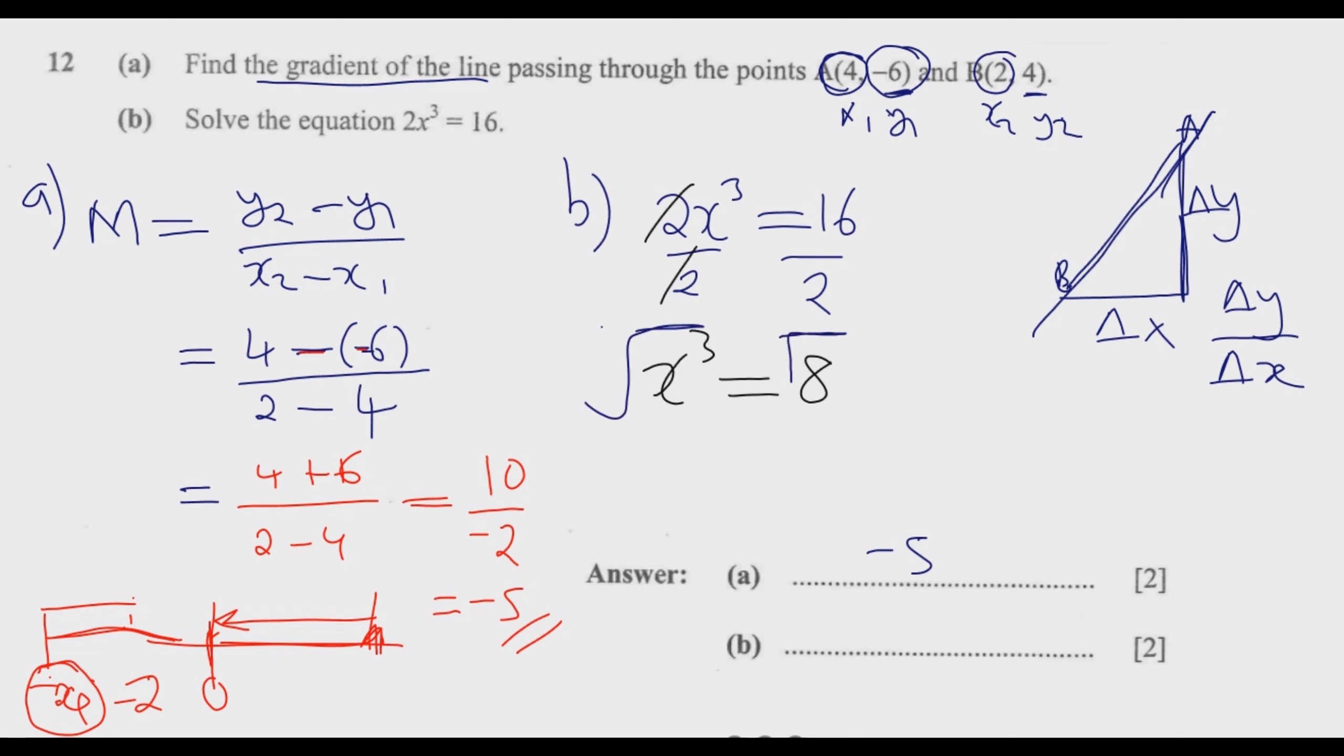The cube root of x³ equals the cube root of 8. What number can you multiply itself 3 times to give you 8? It's 2: 2 times 2 is 4 times 2 is 8. It can't be -2 because -2 times -2 is 4 times -2 is -8, but the answer is 8 which is positive. So x equals 2.